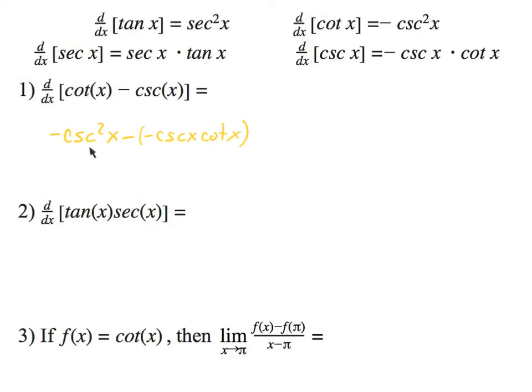So I would like to simplify this by pulling out a GCF. My GCF I see that's in both of these pieces is a cosecant x. So I'm going to pull a cosecant x out. Cosecant x times what gives us this? That would be a negative cosecant x. And then a cosecant times what will give us a positive this? Well, that would be a positive cotangent x. You can also do trig manipulation and change it that way as well.